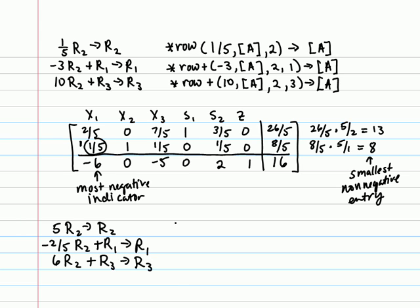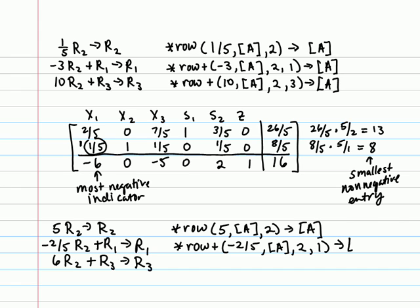If you want to use your calculators for this operation, the first one would be times row 5, matrix A, row 2, stored into matrix A. The second one would be times row, our multiple is negative 2 fifths, operating on matrix A, times row 2, add it into row 1, store it in matrix A.